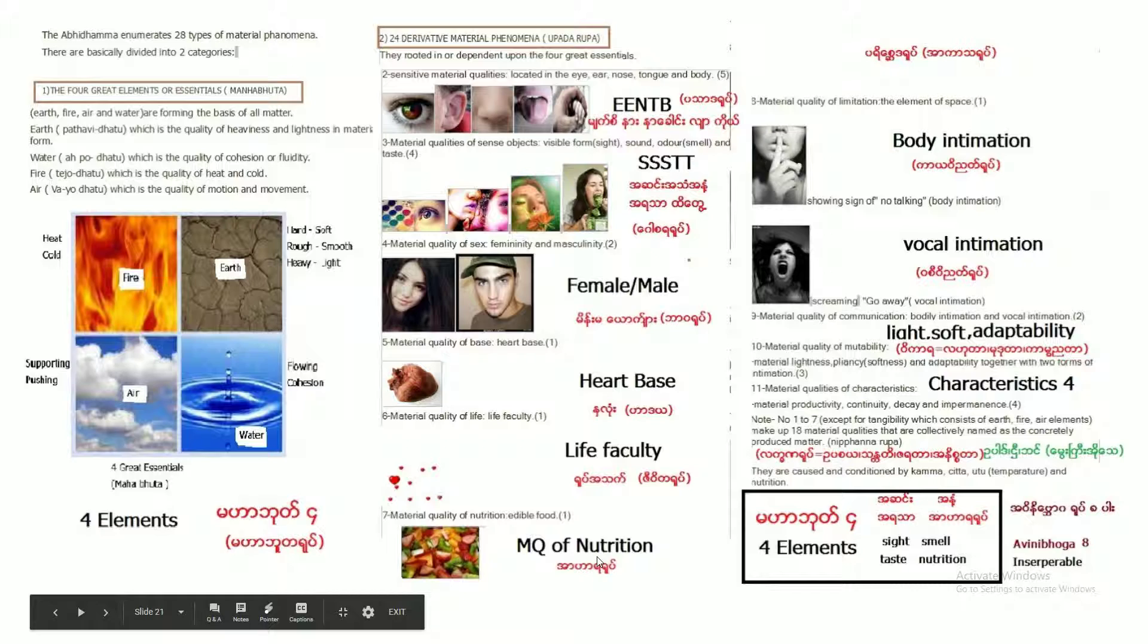The nutritional matter, material quality of nutrition. When you eat, there is some part of the materiality formed by nutrition. So there is a space between the two small matters, small tiny matters. We call it element of space. Here is material quality of communication, like bodily communication, bodily intimation, and vocal intimation.